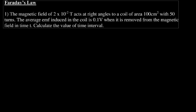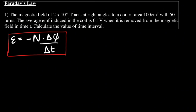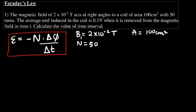How can we do this? We know that the average EMF equals negative N multiplied by the difference in magnetic flux divided by the difference in time. From the question, we have the magnetic field intensity given as 2×10⁻² Tesla, the coil area as 100 cm², the number of turns as 50, and the EMF as 0.1 volts. They also say the coil was removed from the magnetic field, which means B₂ is 0 Tesla.